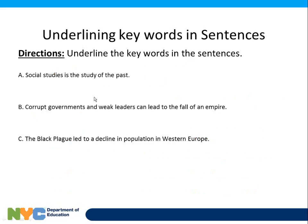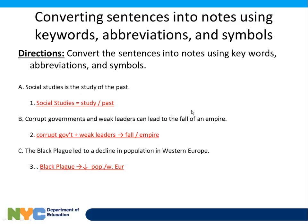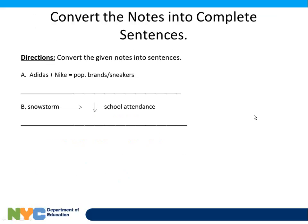Then you try to play around with it. Try to write this in code: 'Social studies is the study of the past.' Press pause and read the rest. Here's what's important — the who, the what are they doing, the when. Here's the answer: social studies is the study of the past. Corrupt government and weak leaders lead to the fall of empires. The Black Plague led to a decrease in the population of Western Europe.